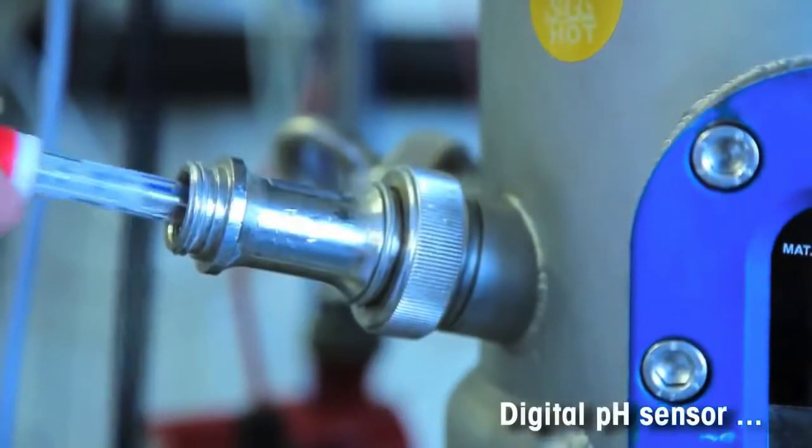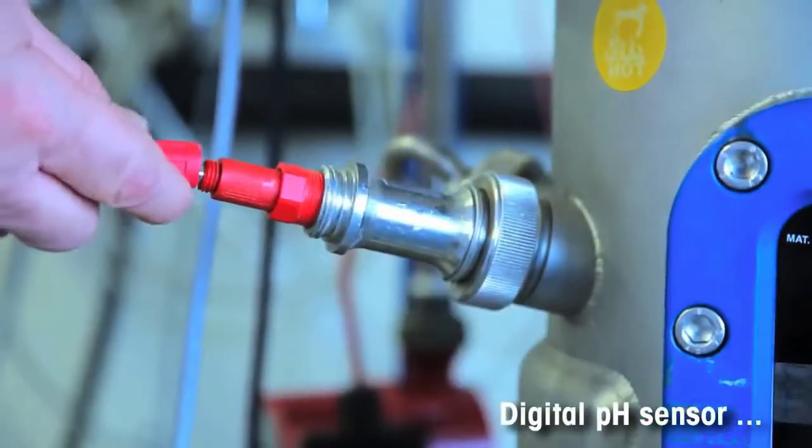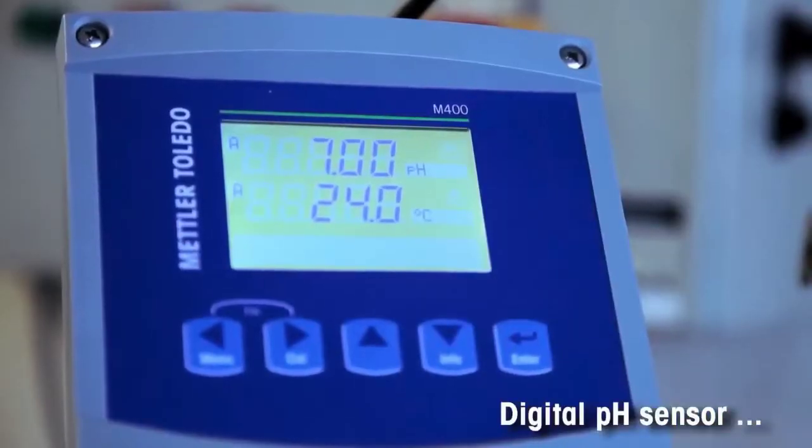Just connect the pre-calibrated digital sensor to the transmitter. The sensor is automatically recognized and calibration data is uploaded.